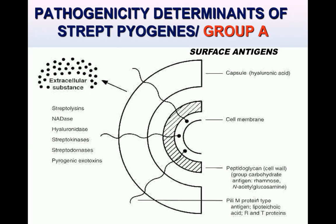The organism also has lipoteichoic acid, which comes out from the surface of Group A streptococci and is responsible for adhesion to the oral epithelial membrane — in other words, it is responsible for colonization.